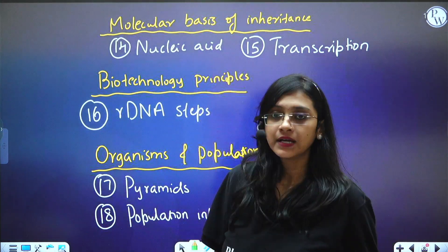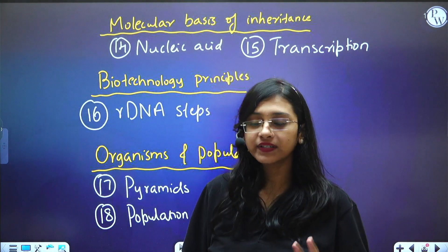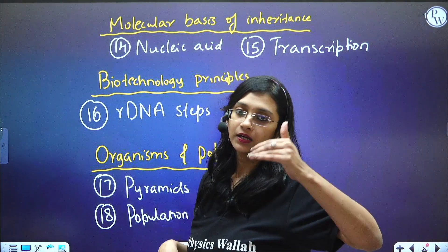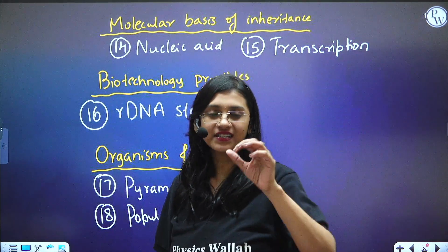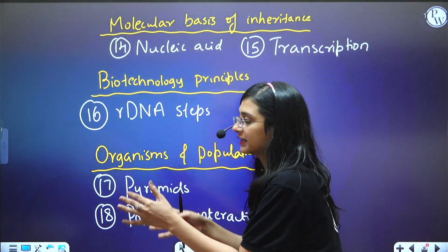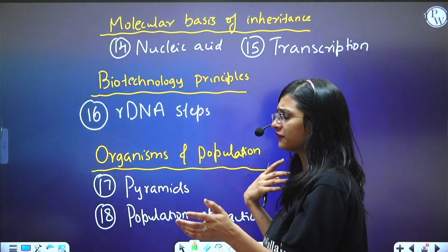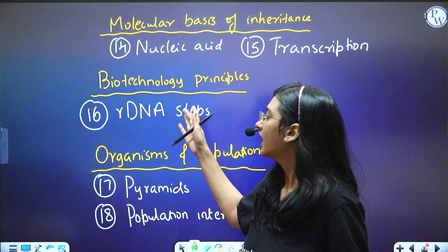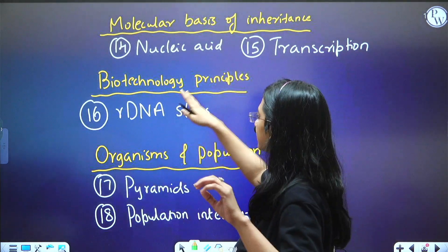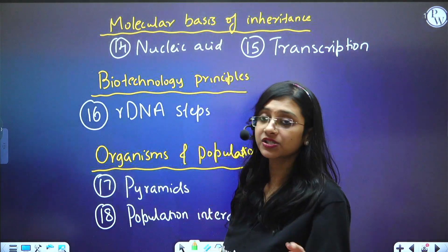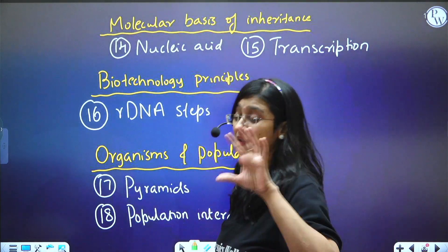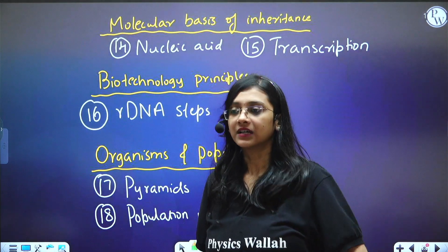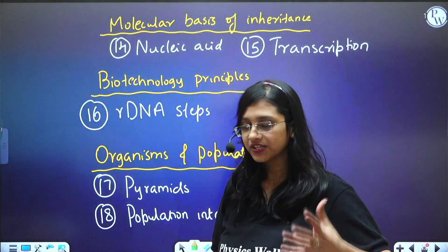Next, Biotechnology — there are two chapters. Under Principles and Processes, what is important are all the steps of rDNA technology: not just the names, but also what happens at each step, the different types of vectors, and different examples. Under Biotechnology and its Applications, that chapter is also important, but I can't specify which topic as questions keep changing.